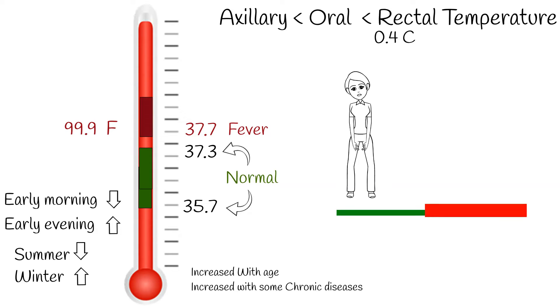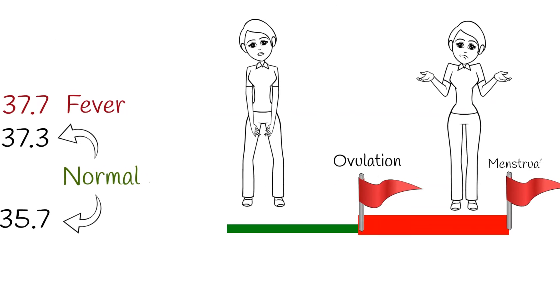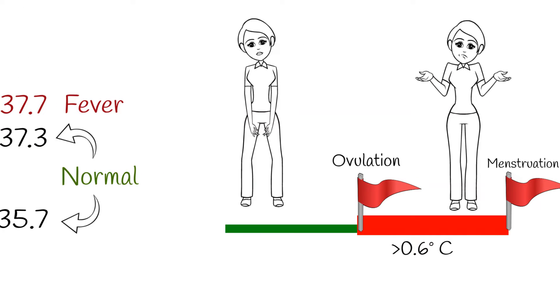In reproductive age women, early morning temperature is lower before ovulation. After ovulation, temperature increases around 0.6 degrees Celsius or 1 Fahrenheit and stays increased until menstruation occurs.